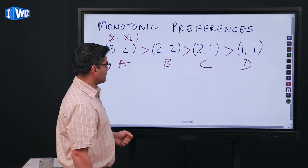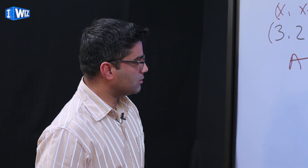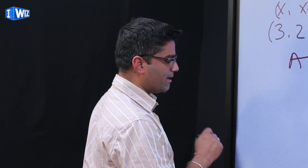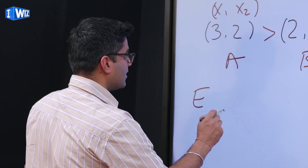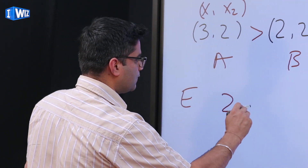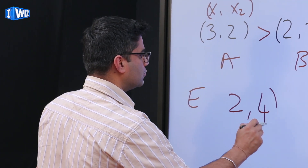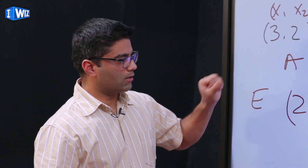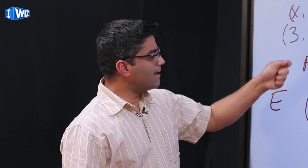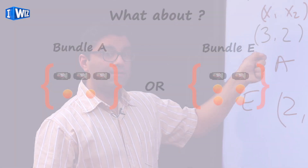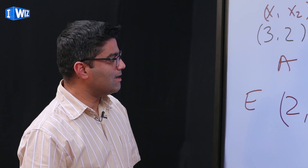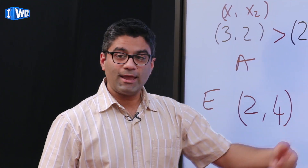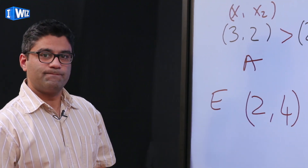Let me leave you with a question for next time: compare bundle A to bundle E, which has two units of good one and four units of good two. When you look at these two bundles, you're getting more of good two but giving up some of good one. Think about what you can say about preferences between A and E — this will be different from comparing A to B, C, and D.